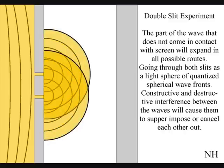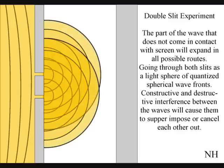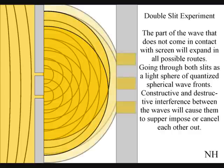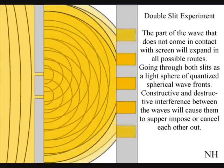Constructive and destructive interference between the waves will cause them to superimpose or cancel each other out. When this wave-particle function comes in contact with the screen, it will collapse, creating moments in time and quantum particles in the shape of an interference pattern.